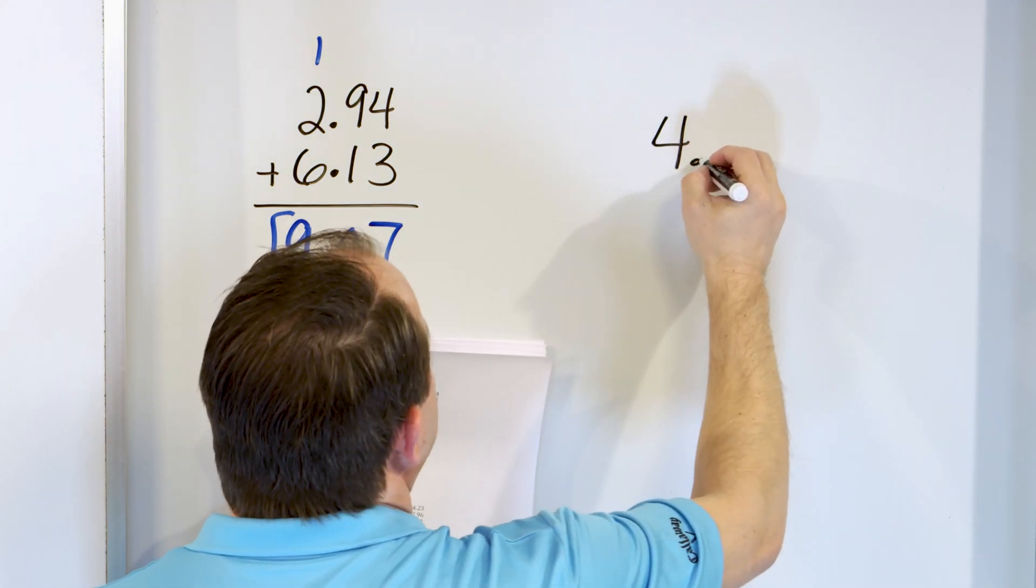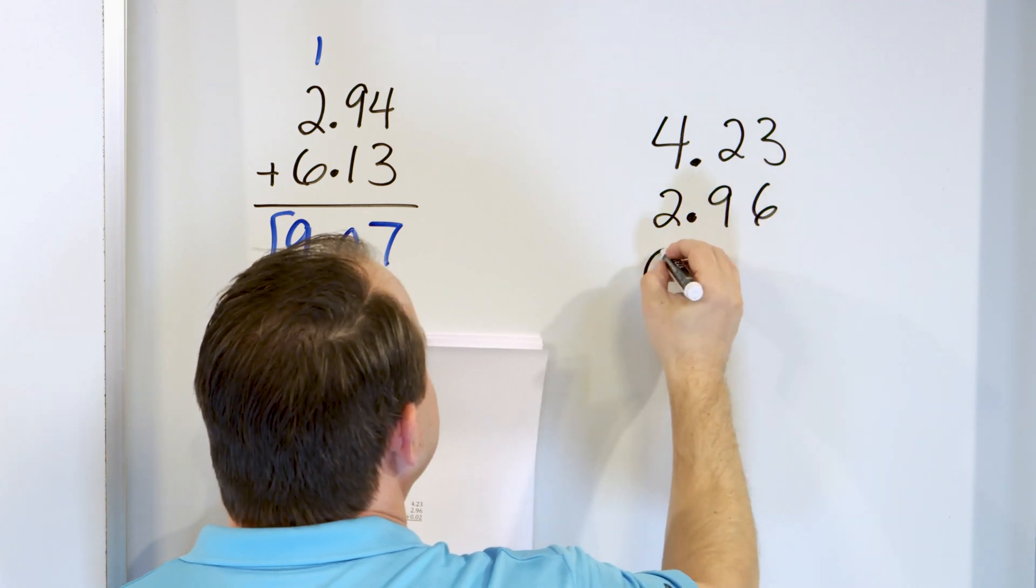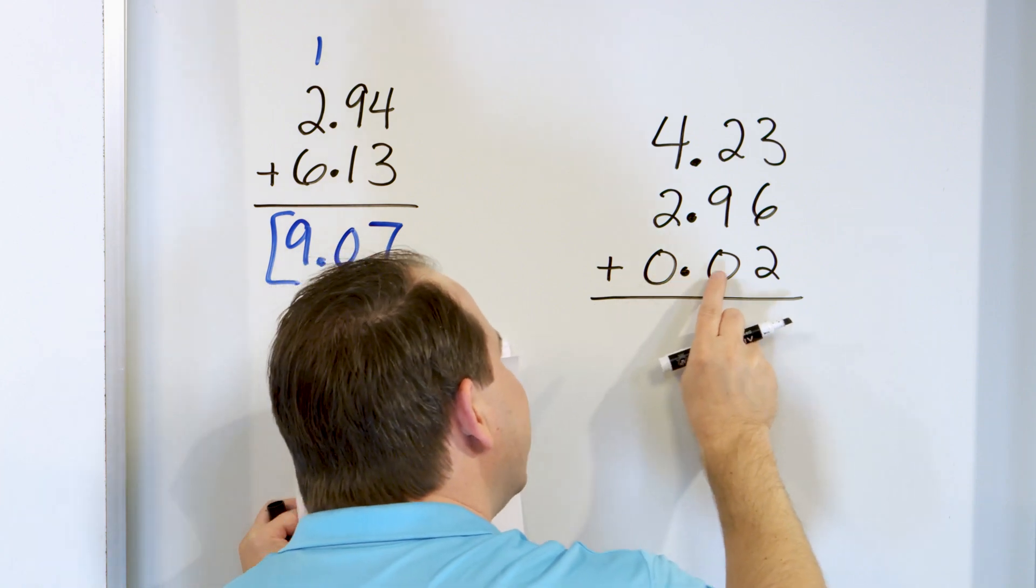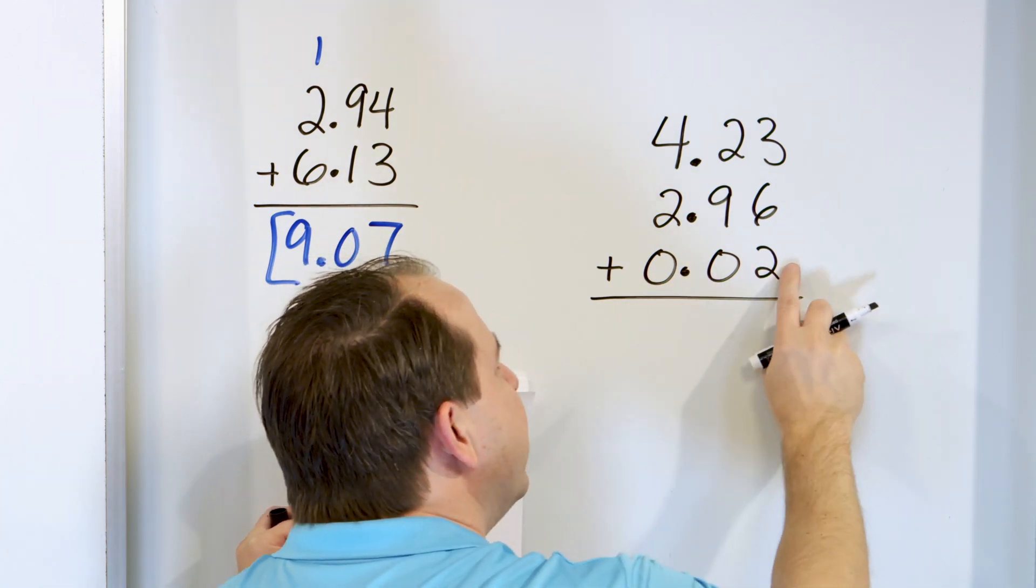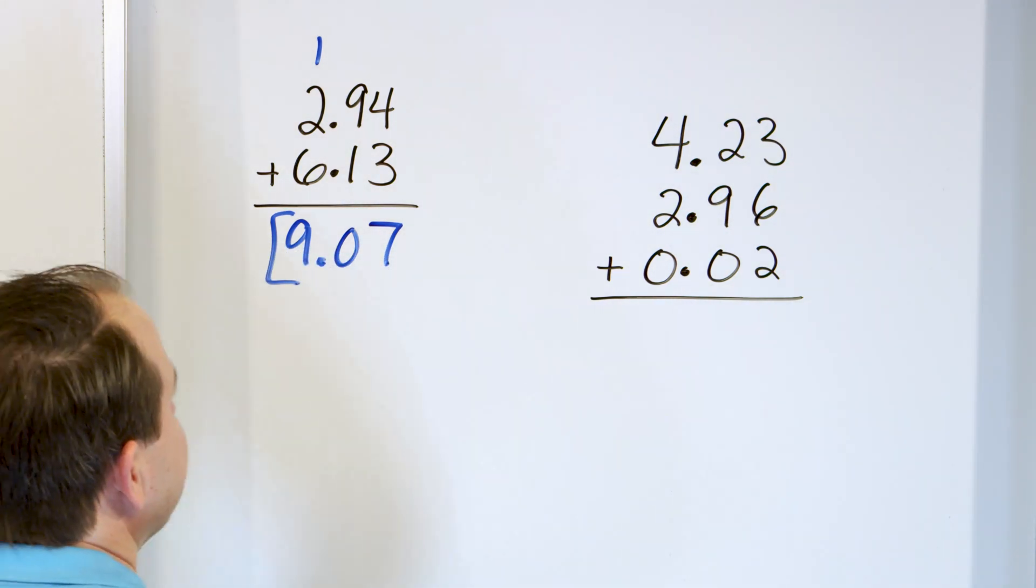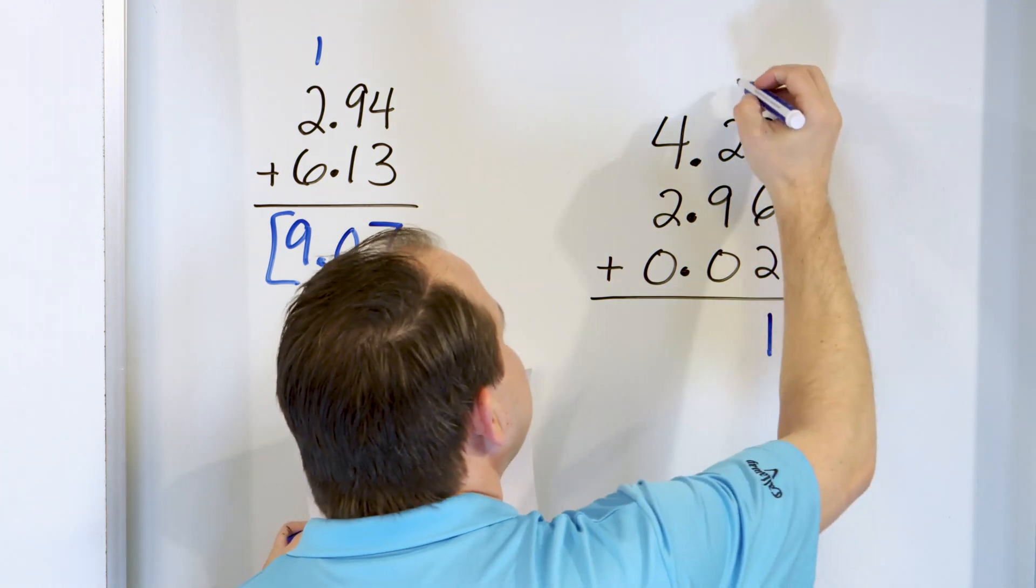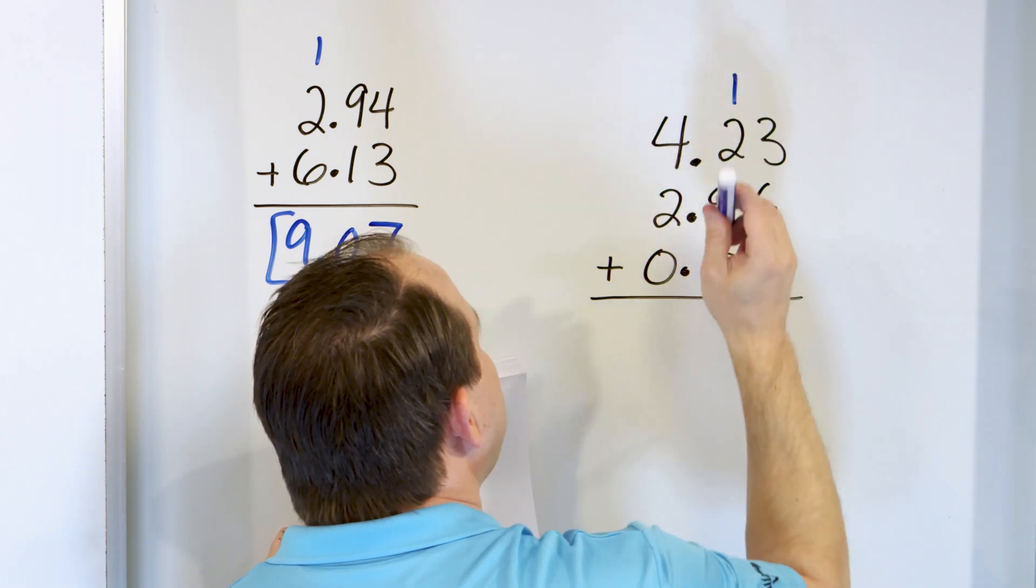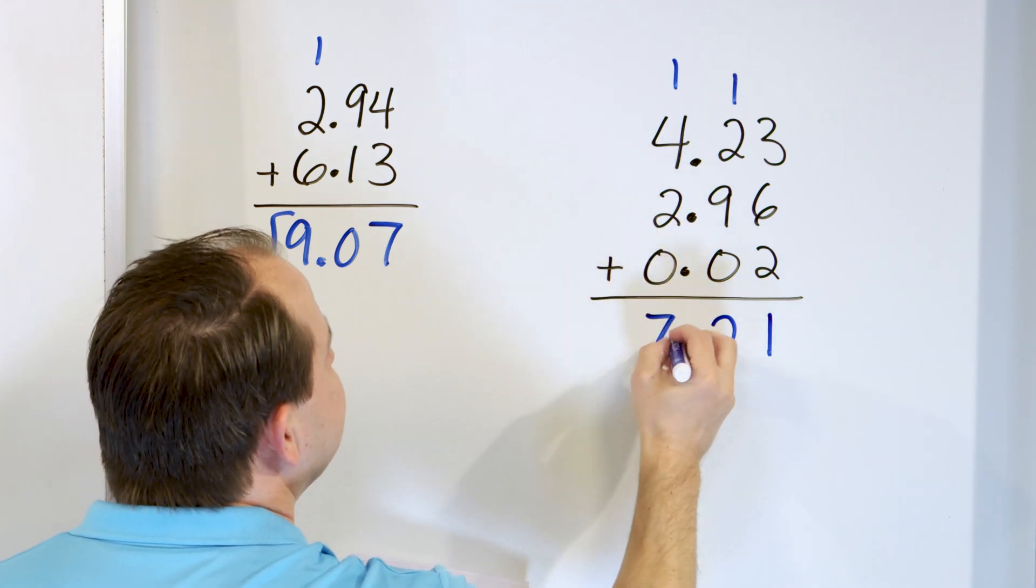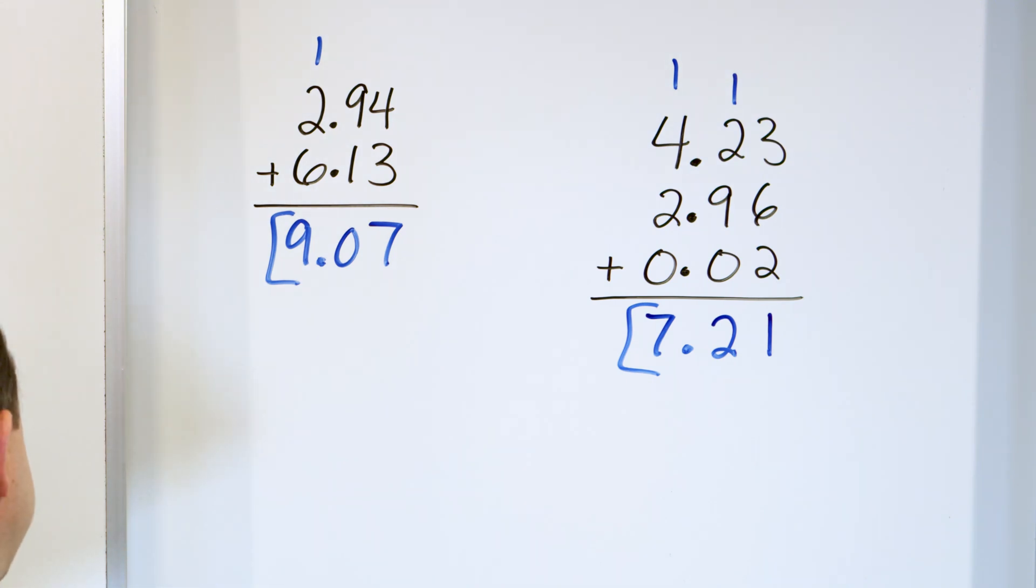Only two more problems. Let's take a look at 4.23. And we'll add to that 2.96. And we'll add to that 0.02. Notice this last number 0.02 is very close to 0. We just have a tiny little bit above 0 there. Here we have 6, 7, 8, 9, 10, 11. 11 means we put a 1, carry a 1. 9, 10, 11, 12 means we put a 2, carry a 1. 4, 5, 6, 7 means we put a 7 and the decimal flows down for 7.21. And that's the final answer.